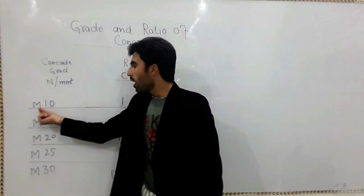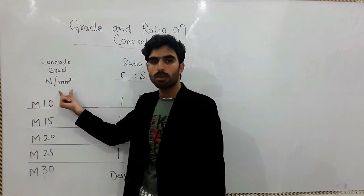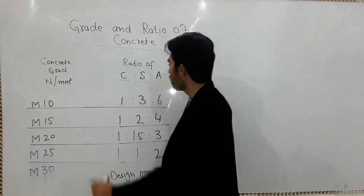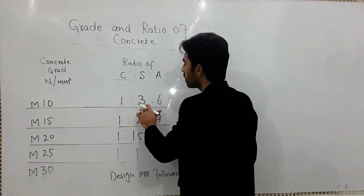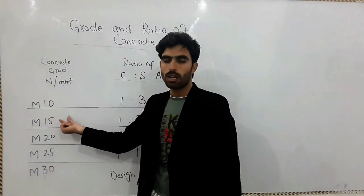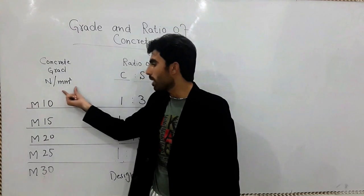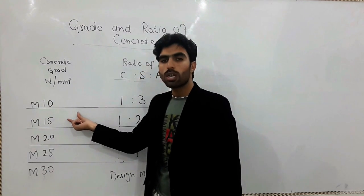So when you want to get M10 - okay, 10 Newton compressive strength of the concrete - for that the ratio will be 1:3:6. When you want to get M15 compressive strength N per mm square, means 15 Newton per mm square, what kind of ratio is necessary for you to use there?